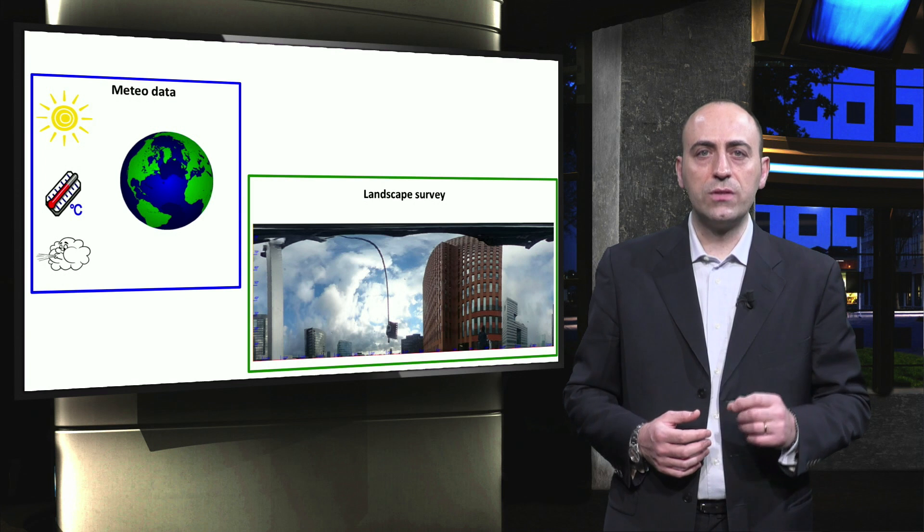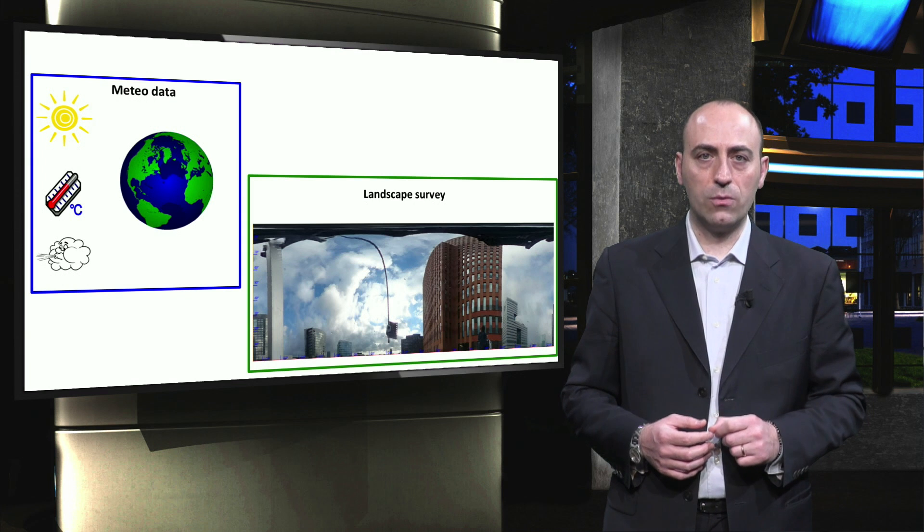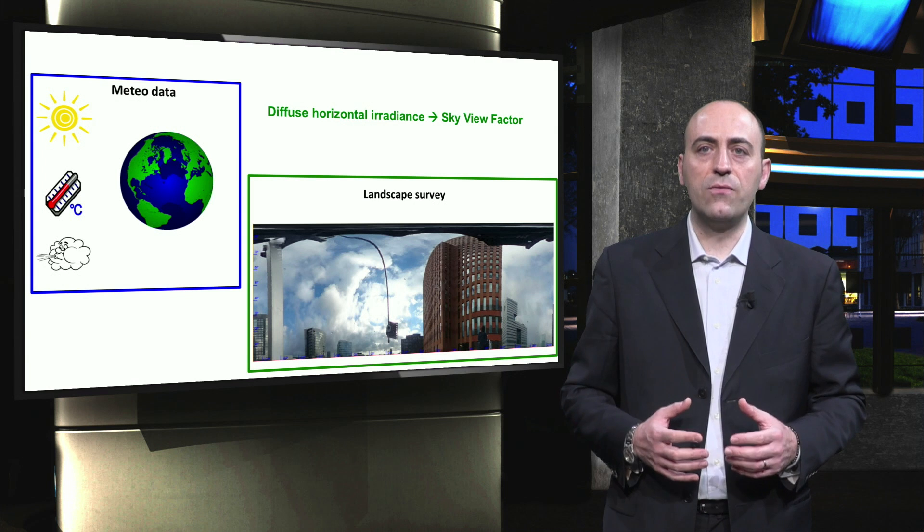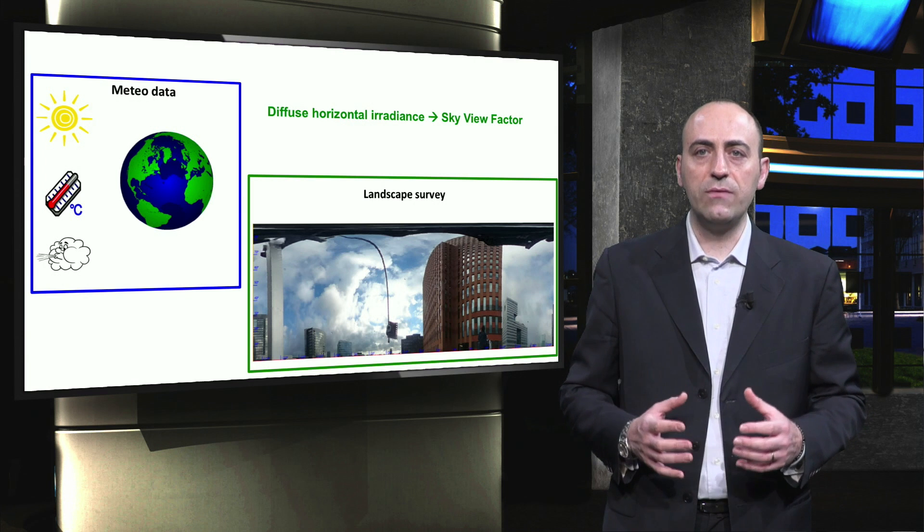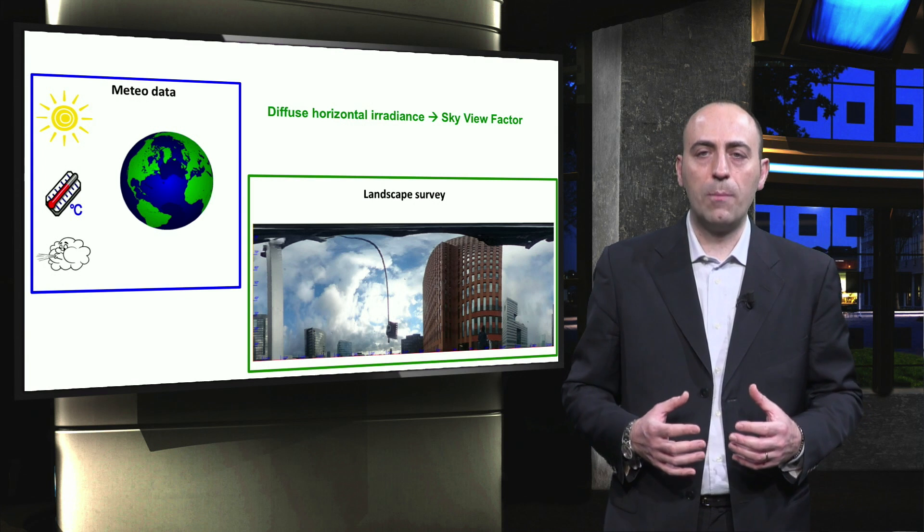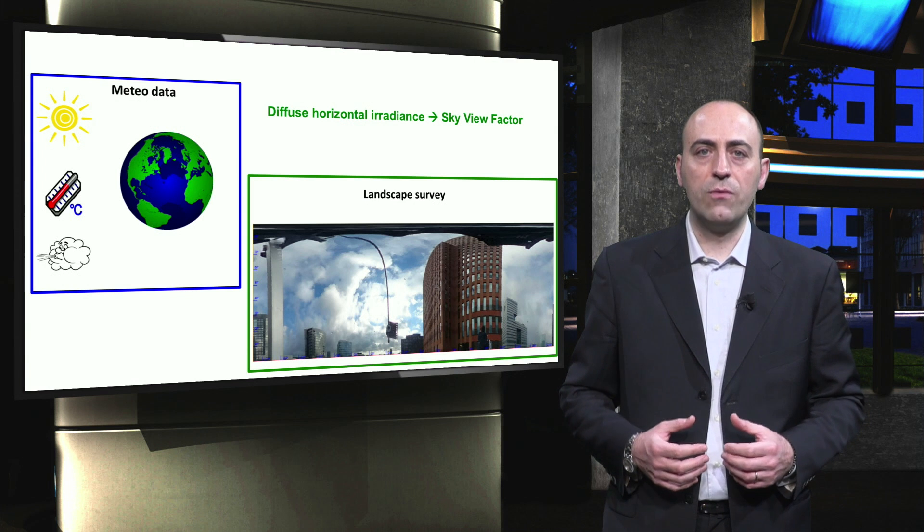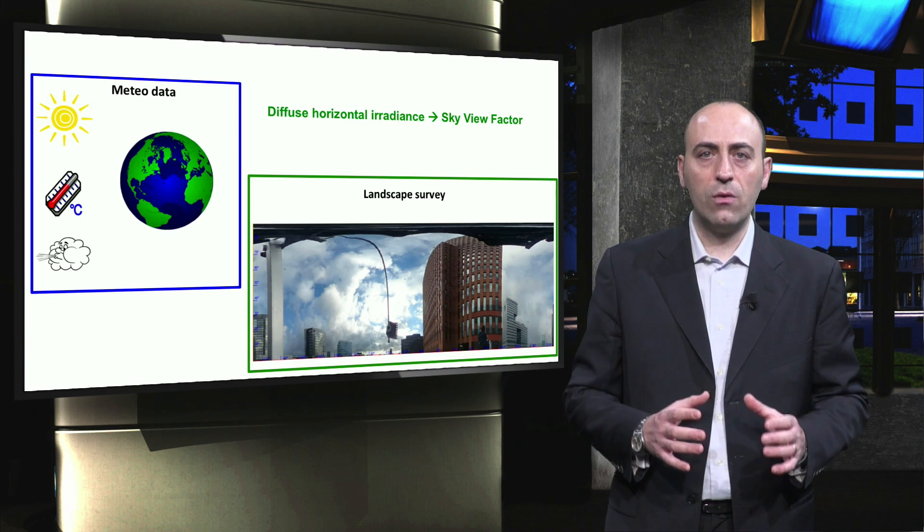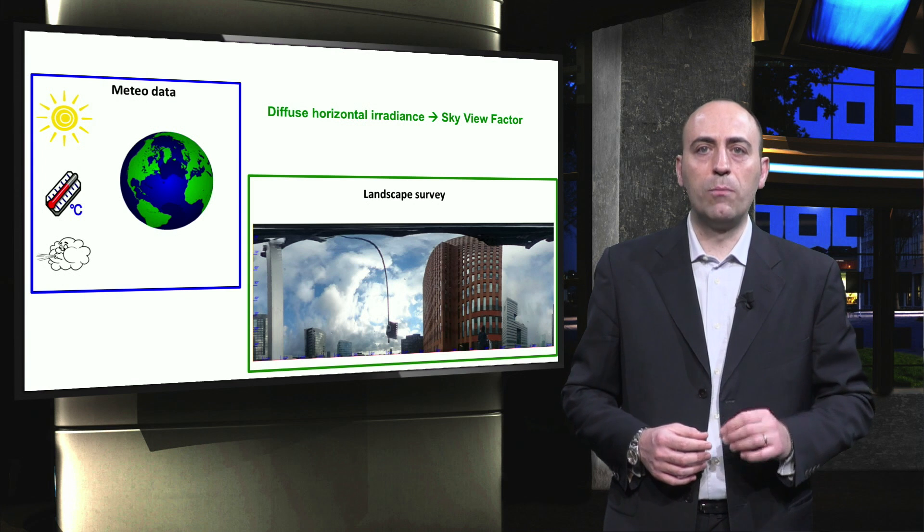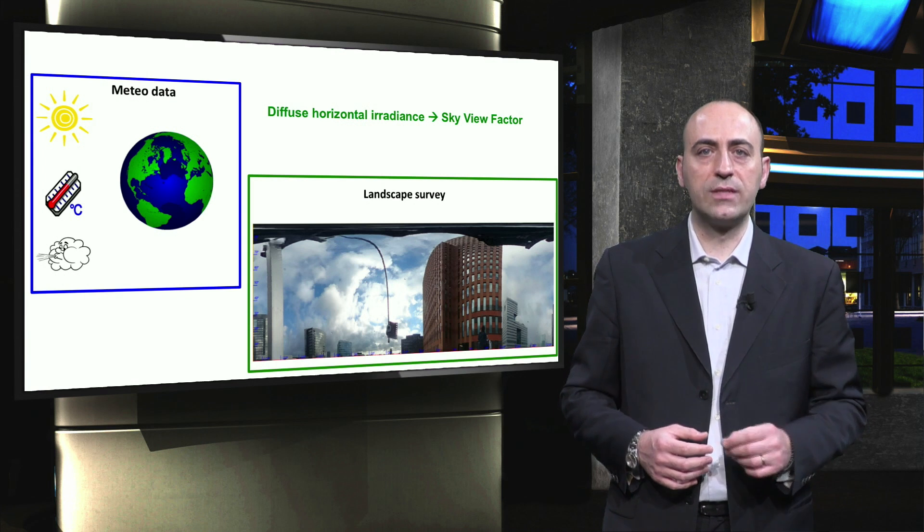Shading reduces the direct irradiance incident on a PV module. In addition to the direct irradiance, the Earth's surface receives a significant amount of solar power in the form of diffuse radiation. The amount of diffuse irradiance received by a solar panel at a particular location depends on the visible portion of the sky, also called the sky view factor.